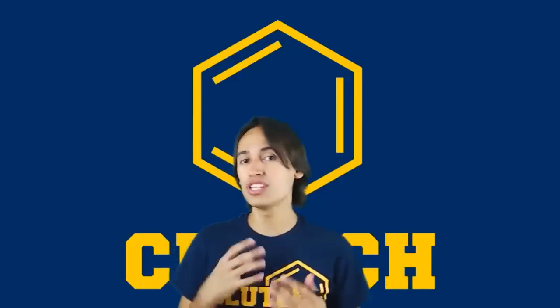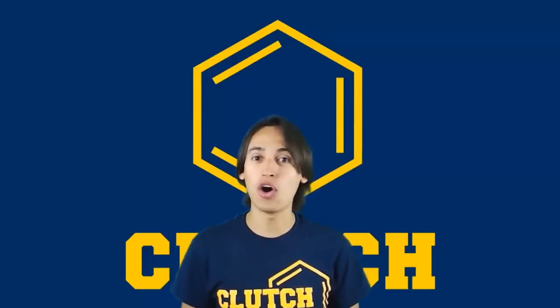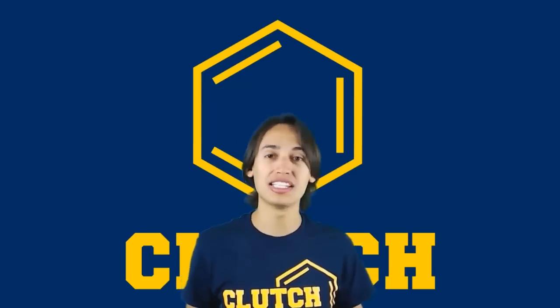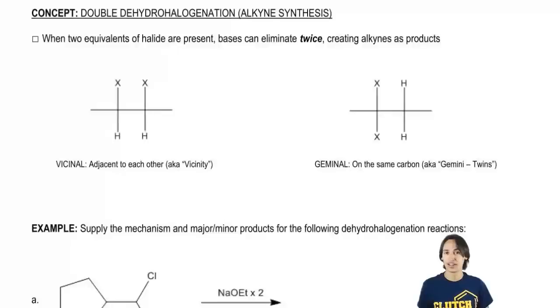Now I want to talk about a way that we can use elimination to make alkynes instead of alkenes, so actually making triple bonds out of elimination. It turns out that all we have to do in this case is do a dehydrohalogenation twice. So what this is going to be called is double dehydrohalogenation. So let's go ahead and figure out how this works.